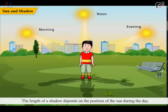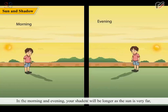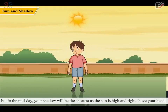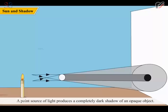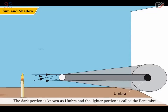The length of a shadow depends on the position of the sun during the day. Observe your shadow on a bright sunny day at different times. In the morning and evening, your shadow will be longer as the sun is far away. But at midday, your shadow will be the shortest as the sun is high and right above your head. A point source of light produces a completely dark shadow of an opaque object. A wide source of light produces a shadow with an inner dark portion and an outer lighter portion. The dark portion is known as Umbra and the lighter portion is called the Penumbra.